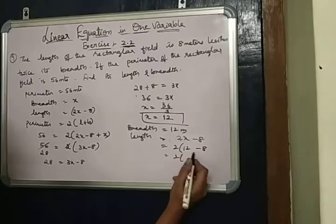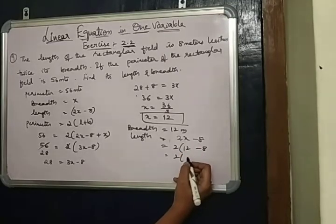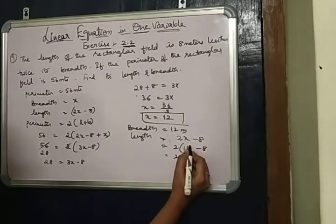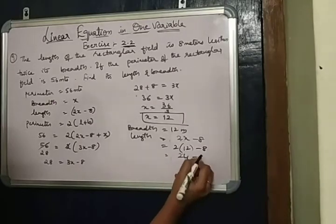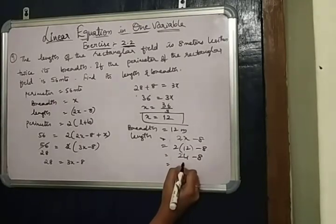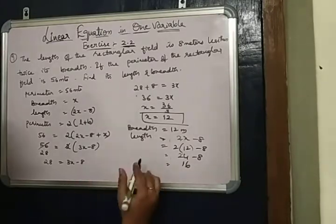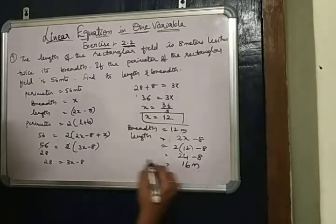2 times 12 minus 8, that is 24 minus 8 is 16. So 16 meters is the length.